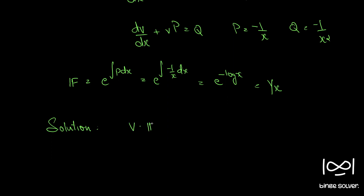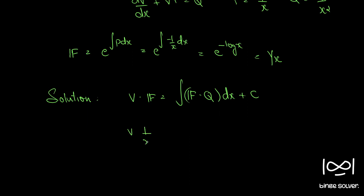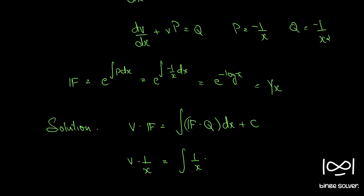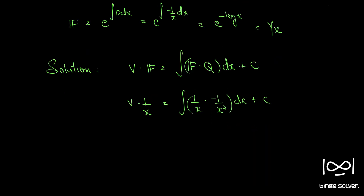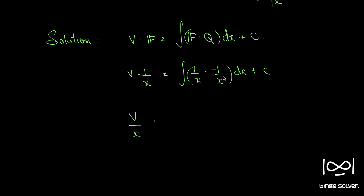The solution for this linear differential equation is v times the integrating factor equals the integral of (integrating factor times Q) dx plus c. So v times (1/x) equals the integral of (1/x) times (minus 1/x²) dx plus c, which is the integral of minus 1/x³ dx plus c. This gives v/x equals minus x^(minus 2)/(minus 2) plus c, simplifying to 1/(2x²) plus c.